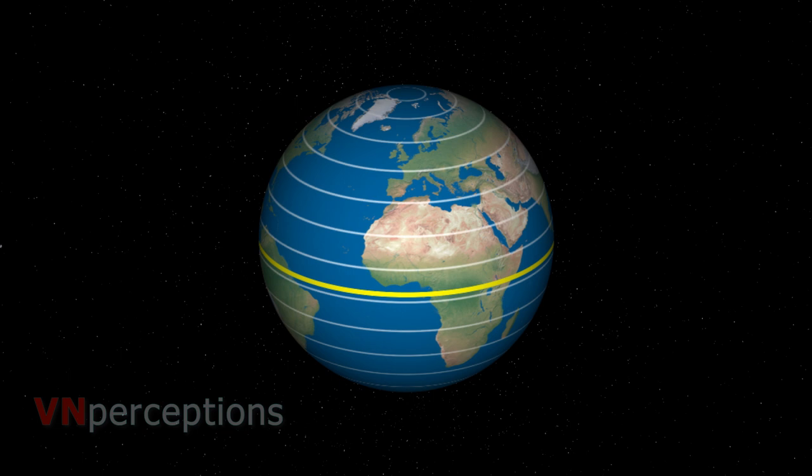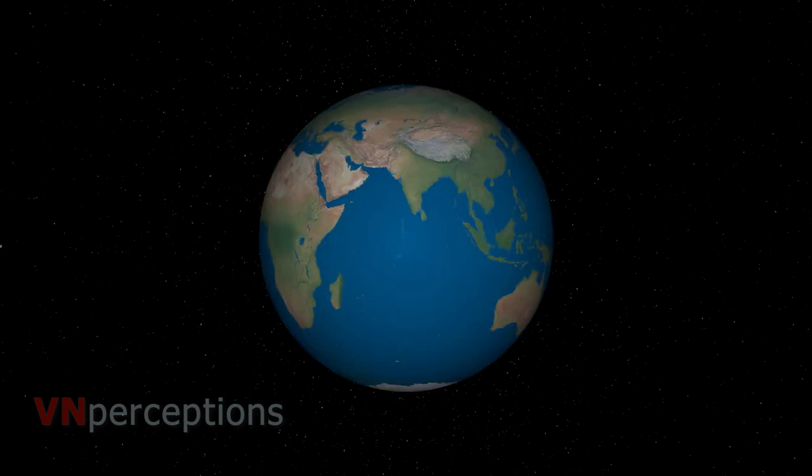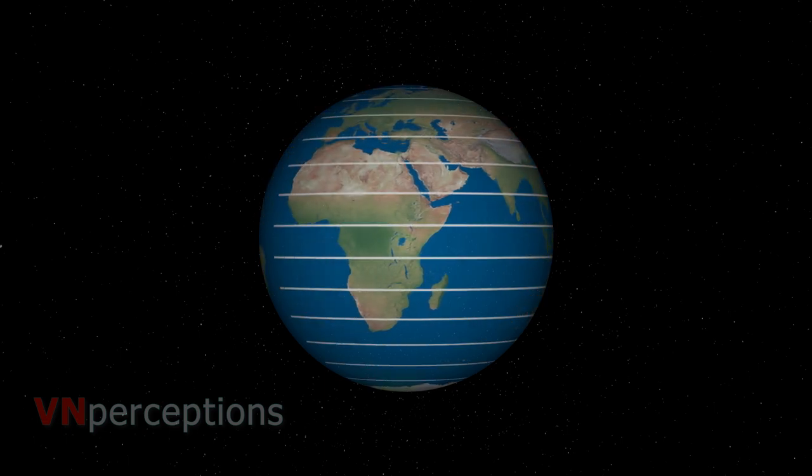It divides the earth into northern hemisphere and southern hemisphere. The distance between any two parallels of latitude is always 111 kilometers. The north pole and the south pole are fixed points and serve as basic points of reference.